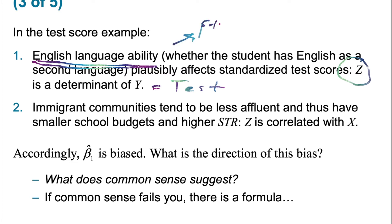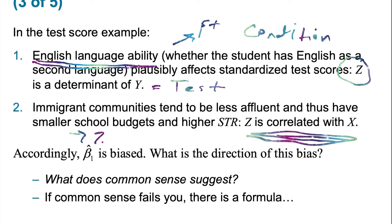English language ability satisfies the first condition — this omitted factor z is important for the outcome variable. Now let's think about whether this omitted factor is correlated with the regressor. Immigrant communities tend to be less affluent and thus have smaller school budgets and higher student-to-teacher ratios. Therefore, z is correlated with x, and our second condition holds too. So by not specifying English language ability in our regression, we are going to impose omitted variable bias on our estimate of the coefficient on the student-to-teacher ratio, which is our beta1 hat.